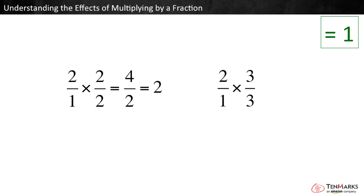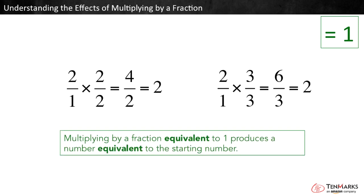When we multiply 2 wholes by 3 thirds, we get 6 thirds, which is also the same as 2. So, multiplying by a fraction equivalent to 1 produces a number equivalent to the starting number.